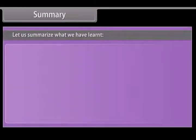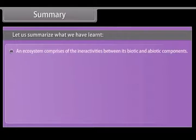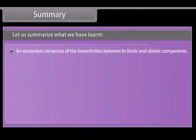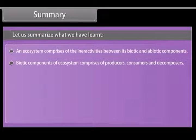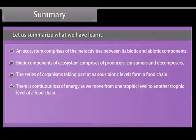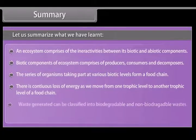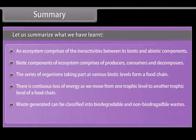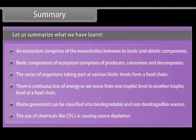Let us summarize what we have learnt. An ecosystem comprises the interactions between its biotic and abiotic components. Biotic components of ecosystem comprise producers, consumers and decomposers. The series of organisms taking part at various biotic levels form a food chain. There is continuous loss of energy as we move from one trophic level to another in a food chain. Waste generated can be classified into biodegradable and non-biodegradable wastes. The use of chemicals like CFCs is causing ozone depletion.